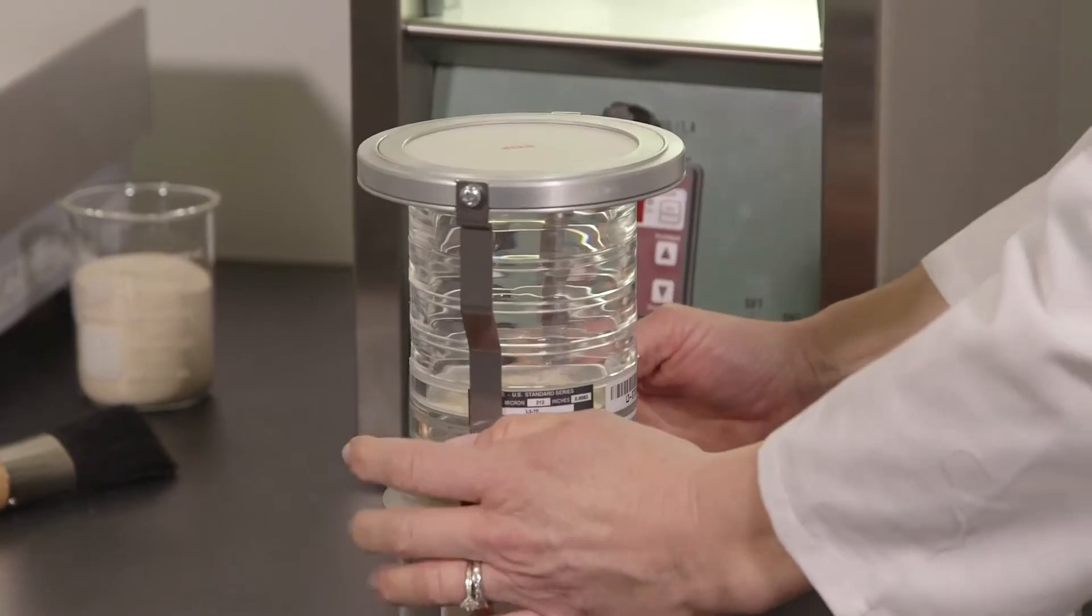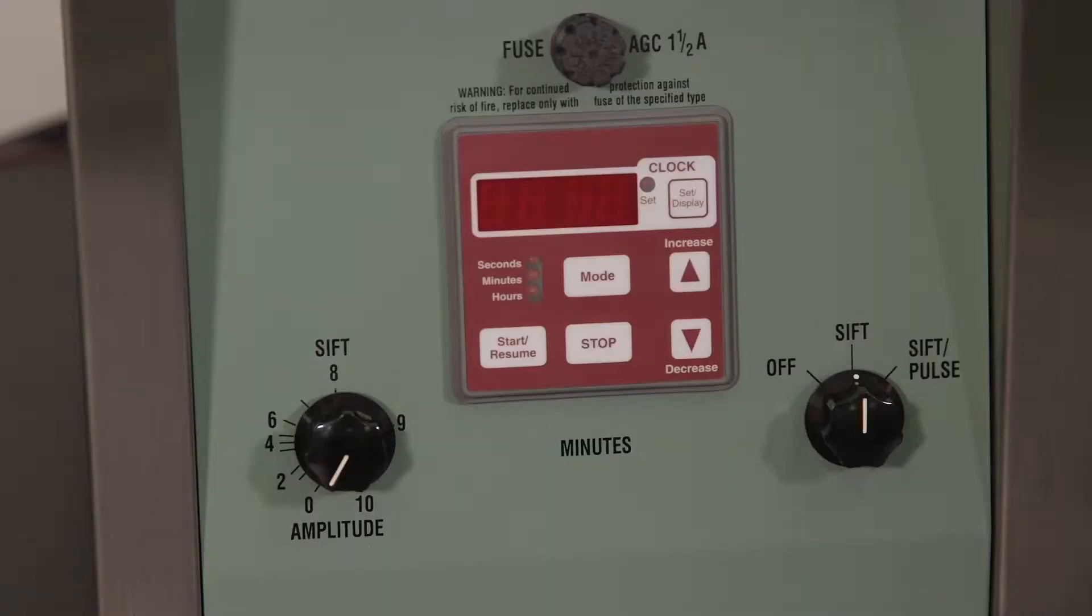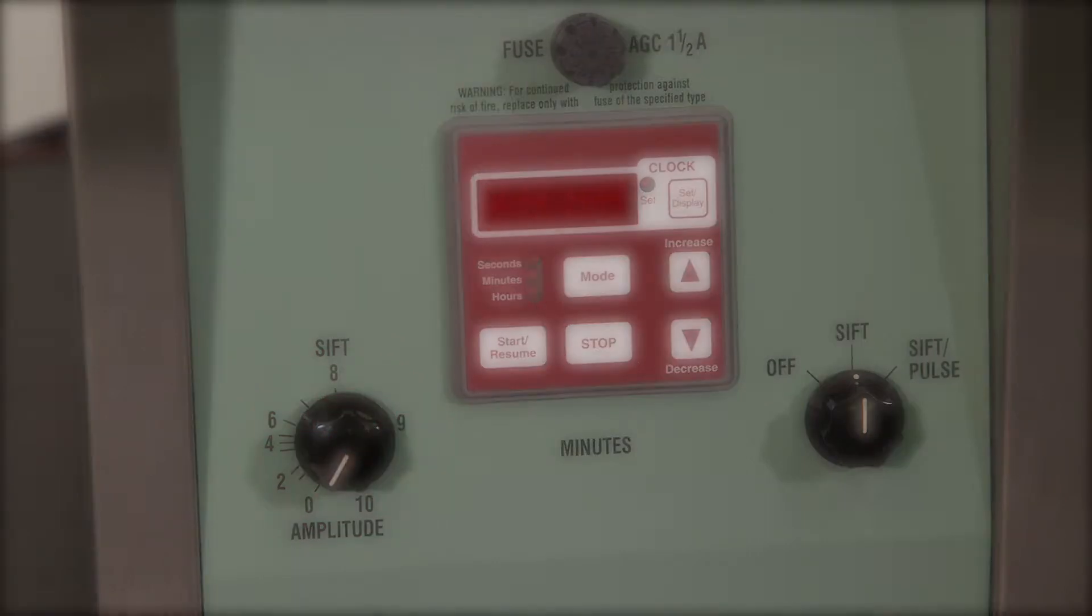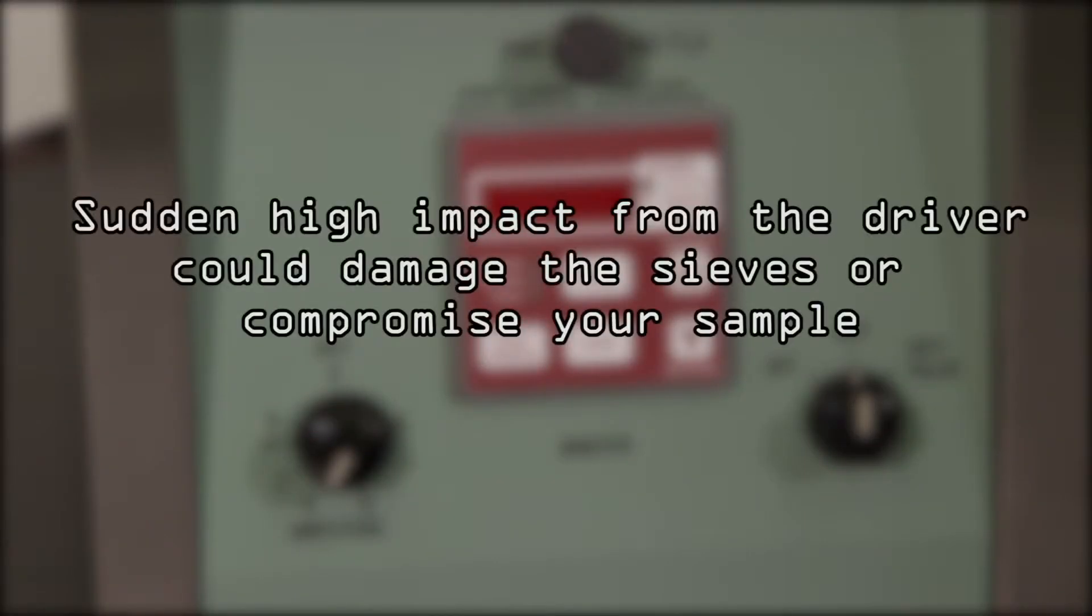Refer to Chapter 6 of Test Sieving Principles and Procedures for tips on determining optimum sample size. Install the diaphragm. When properly oriented, the word top will be visible. Clip everything together with the column lock.